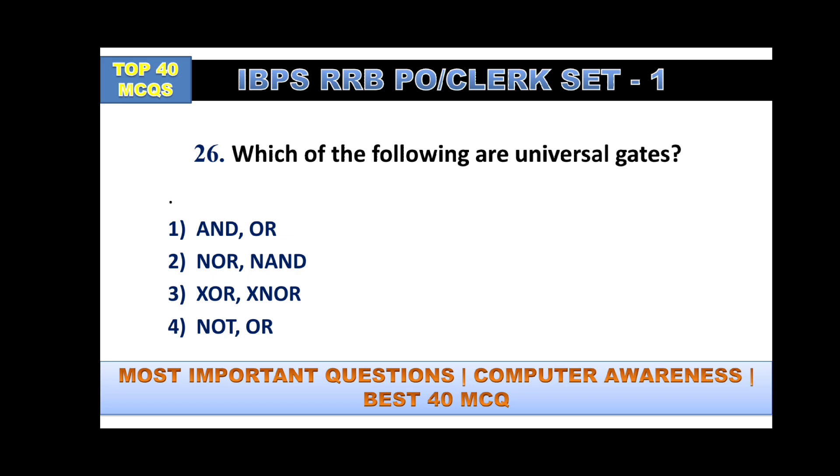Which of the following are universal gates? Earlier we saw the basic gates; now for universal gates, the answer is NOR and NAND — a very important question.